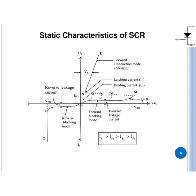First I will tell you about the latching current. In the figure, latching current is marked at the point from which anode current starts increasing when SCR comes from blocking state to conduction state. Latching current is the minimum value of anode current which is required to keep the SCR in on state at the time when SCR is turned on. While holding current is defined as the minimum value of anode current which is required to maintain SCR in on state when it is already in the conduction state, and below that value SCR comes into the blocking state.